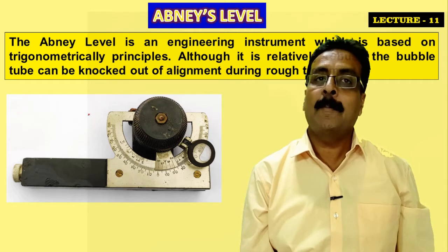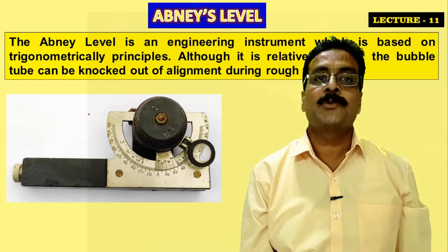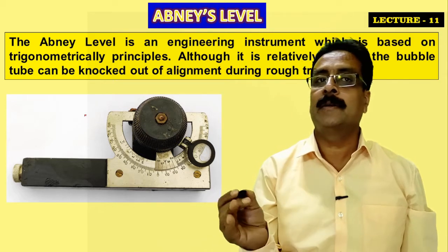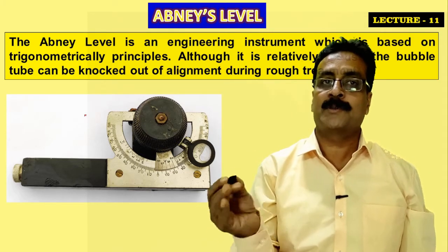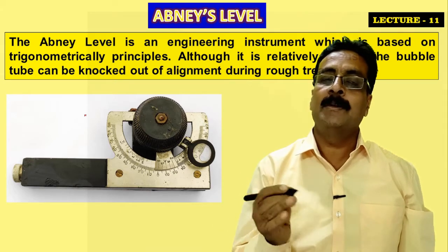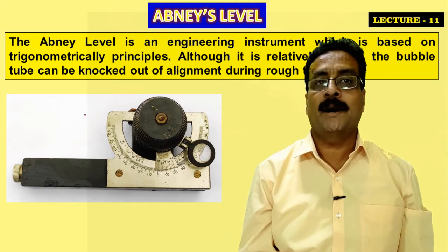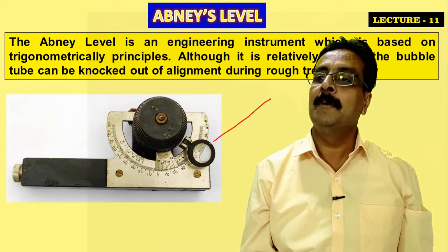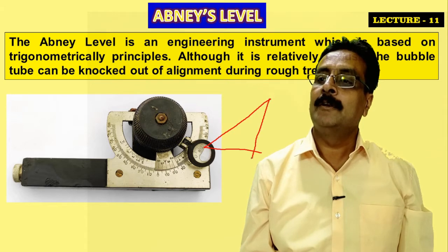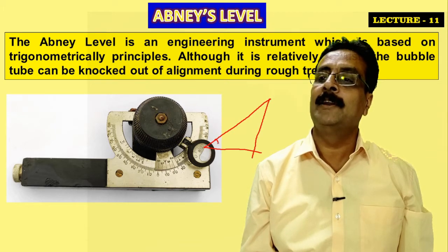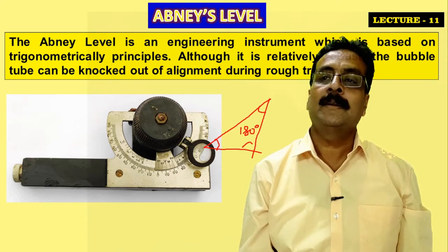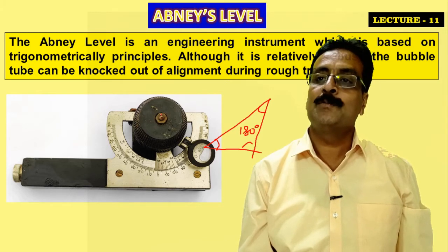In earlier lectures I already covered how to take height by percentage using a percent scale on a clinometer. Here I'll explain how to take height using a degree scale, because we are measuring triangles and triangles have degrees on three sides — the sum of those three angles always equals 180 degrees.